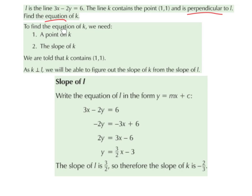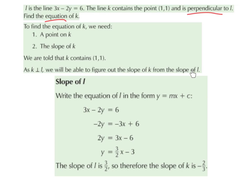To find the equation of k, or the equation of any line, we need a point on k and the slope of k. We are told that k contains the point. As k is perpendicular to L, we will be able to figure out the slope of k from the slope of L.